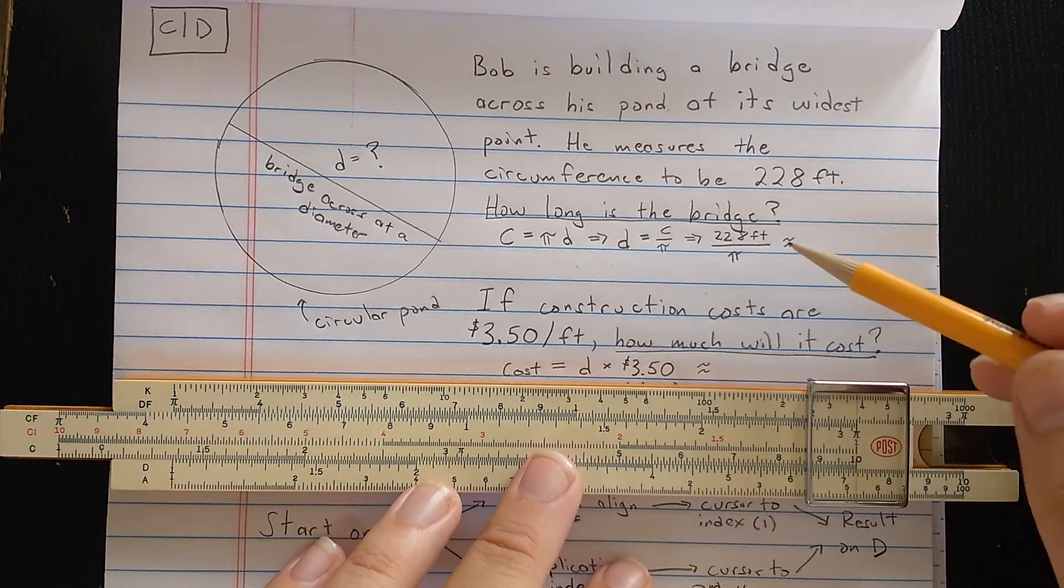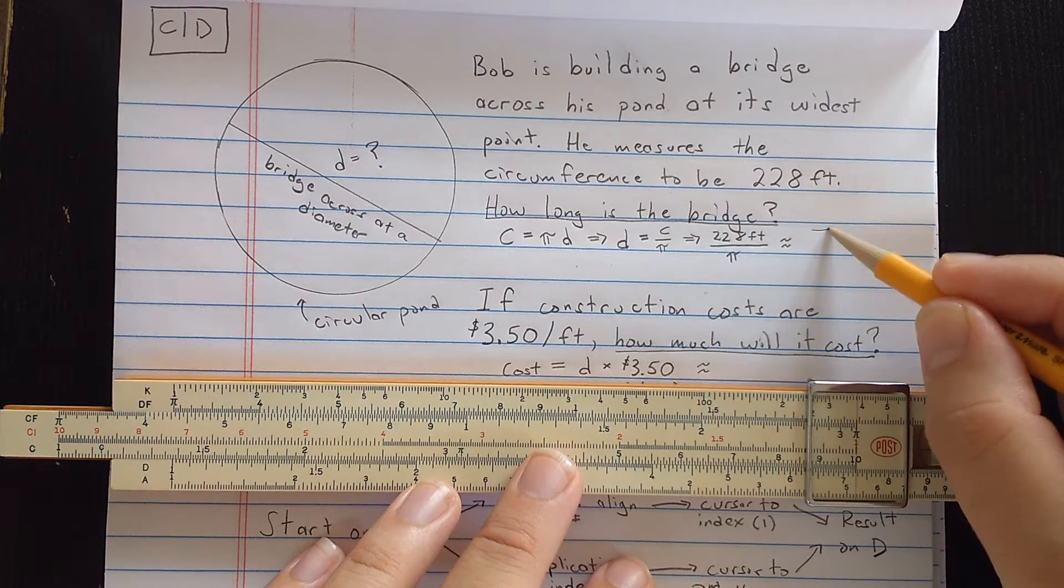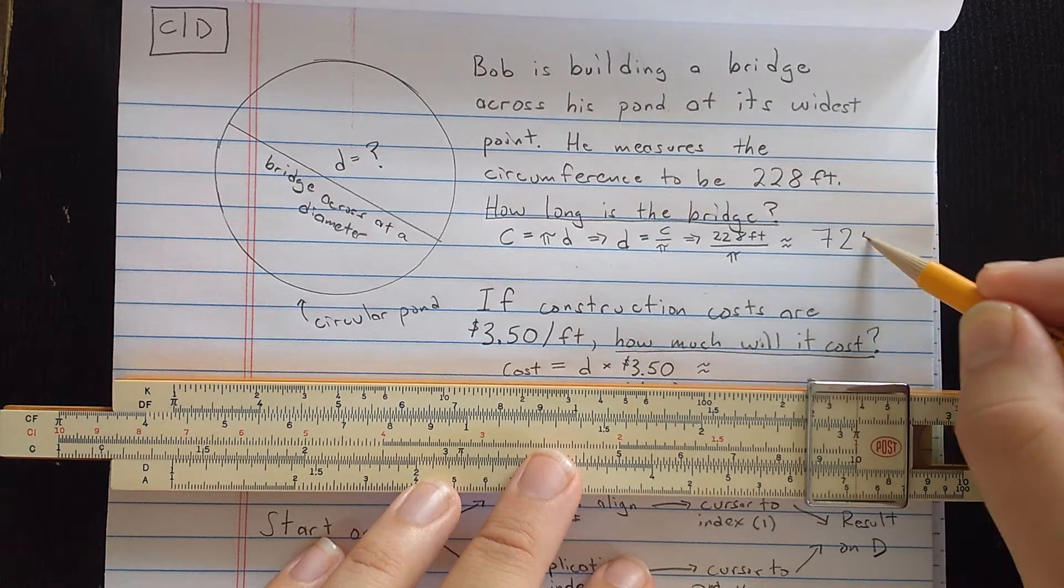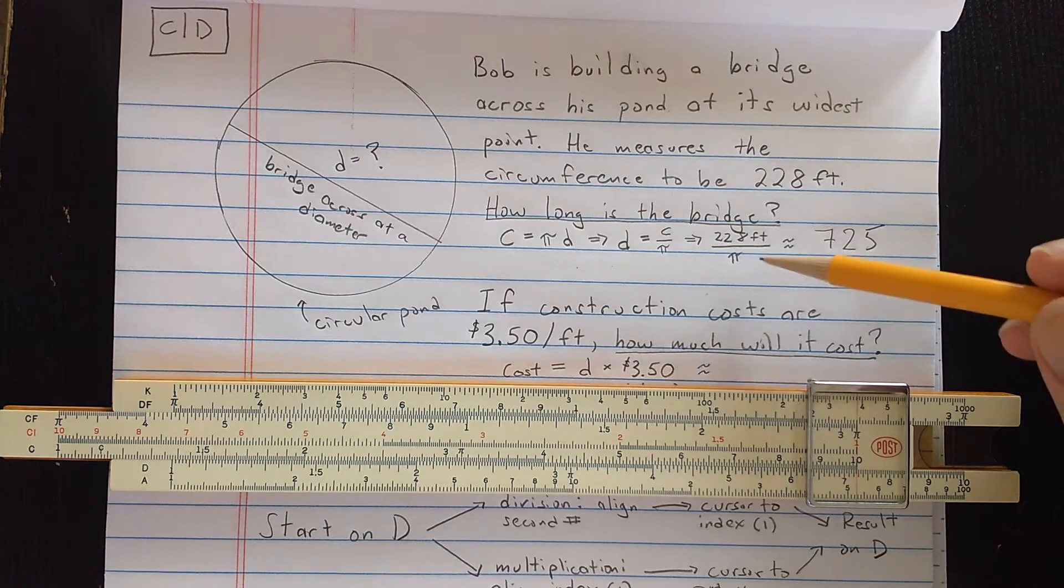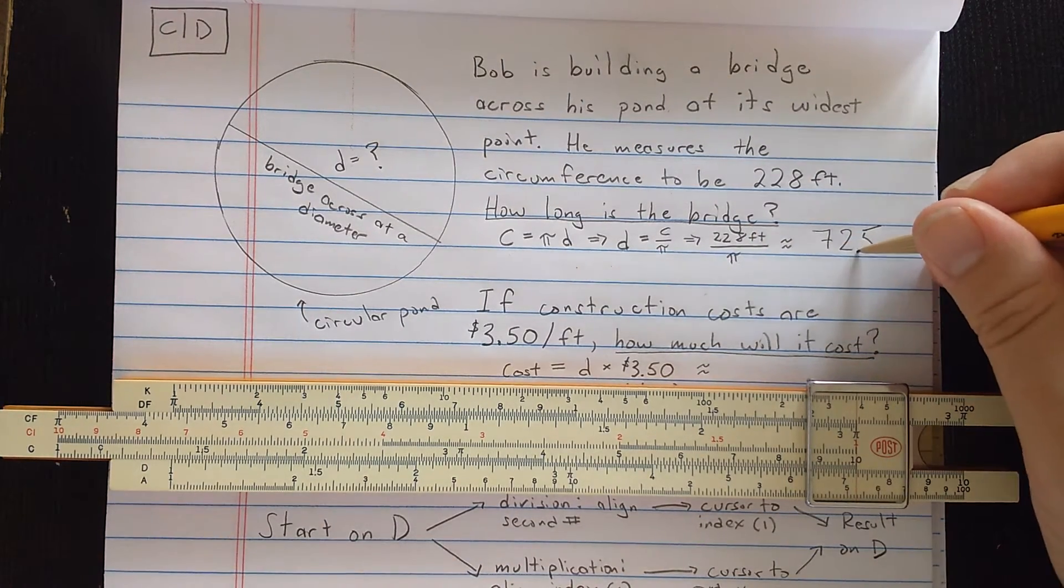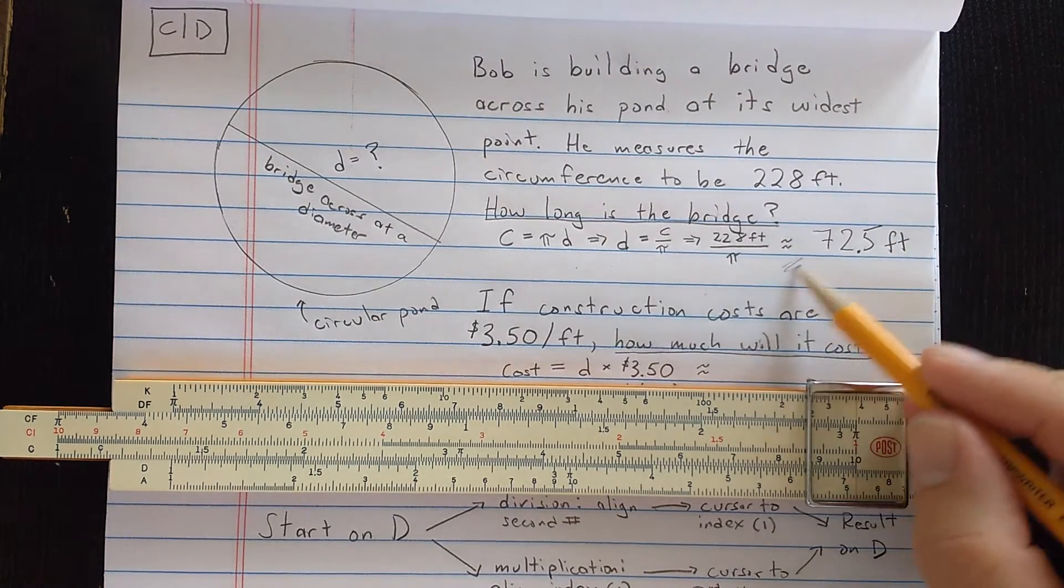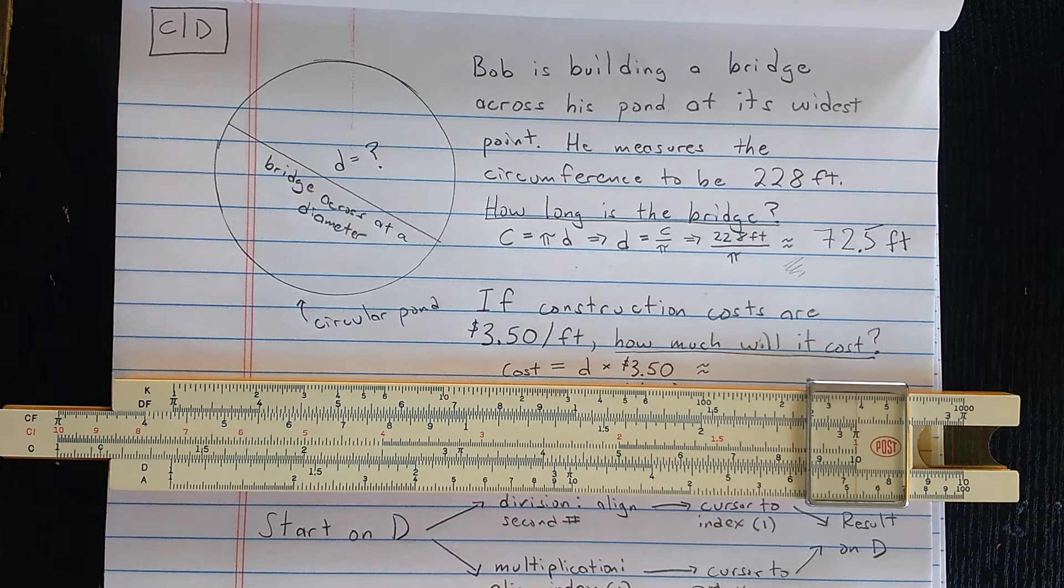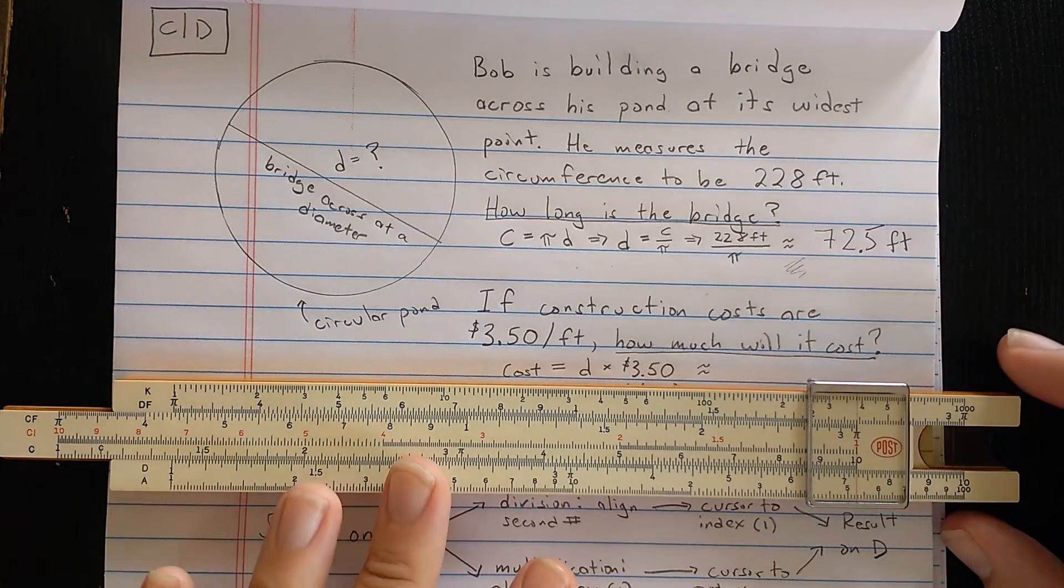Okay, but if you look at the problem, 7.25 cannot be correct. We need to interpret the order of magnitude here. Pi is about 3, so when I divide, this is really about 72.5 feet. I'm going to use this symbol for approximation, because the slide rule, like a calculator, gives us an approximation.